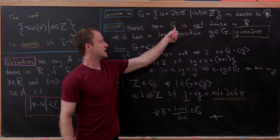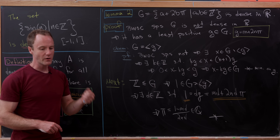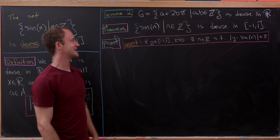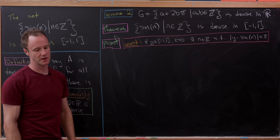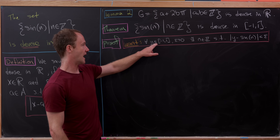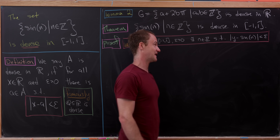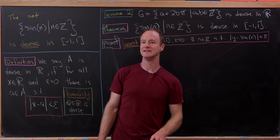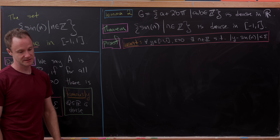This contradiction shows that G is in fact dense in ℝ. Now we're ready for our main result: the set {sin(n) : n ∈ ℤ} is dense in the interval [−1, 1]. We need to show that for all y in that interval and epsilon > 0, we can find an integer n such that the absolute value of y − sin(n) is less than epsilon — exactly the definition of density, now in a subset of ℝ.